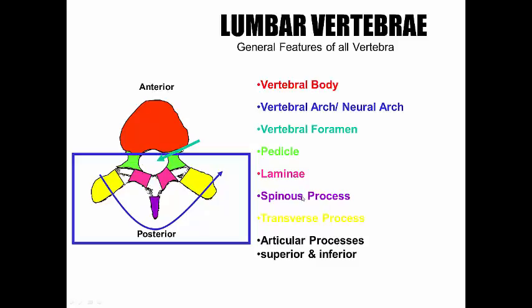We also have articular processes, superior and inferior. Our spine is almost like Legos — they click together through the facet joints, and those can mainly be seen through a sagittal plane view. So let's look at the sagittal plane view.